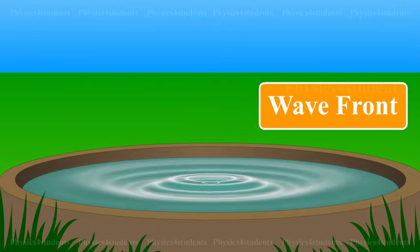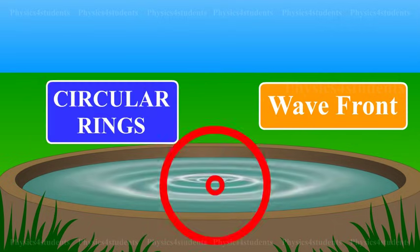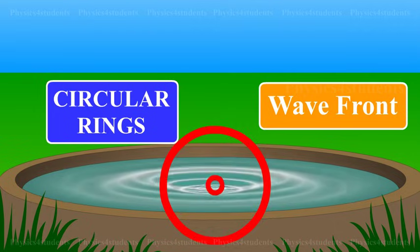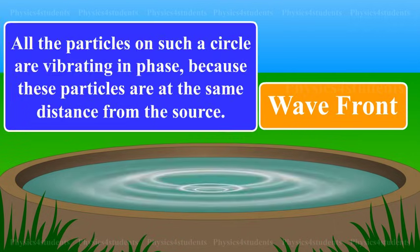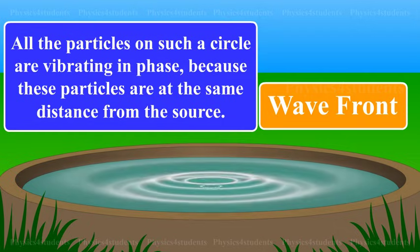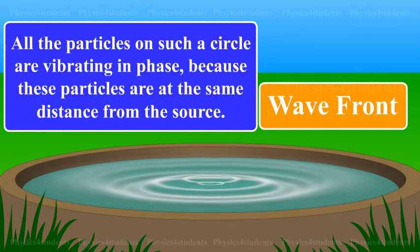At any instant, a photograph of the surface of water would show circular rings on which the disturbance is maximum. It is clear that all the particles on such a circle are vibrating in phase because these particles are at the same distance from the source.